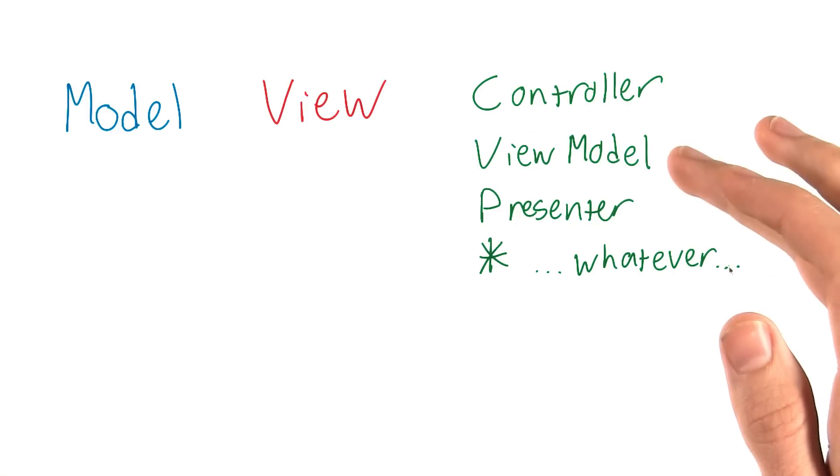Fundamentally, the C, VM, P, and asterisk are all solving the same problem: separating our model from our view.